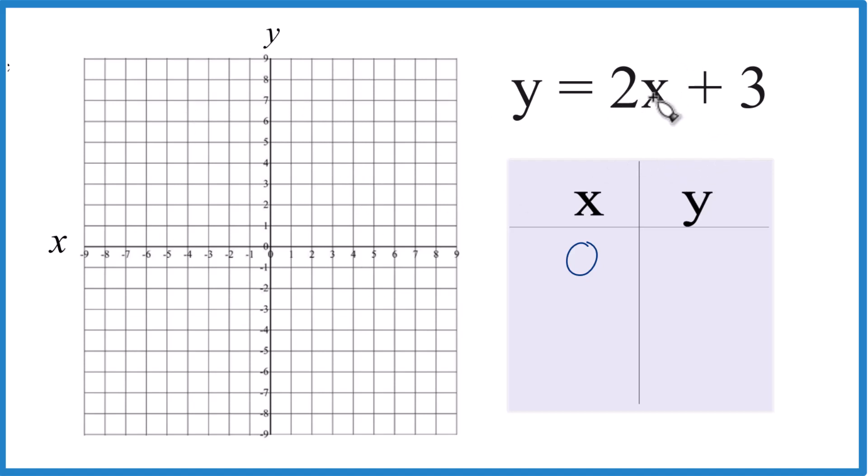2 times 0 is 0. 0 plus 3, that's 3. How about negative 1? 2 times negative 1, that's negative 2. Negative 2 plus 3 is just positive 1.